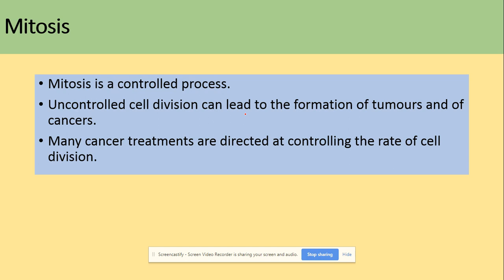Mitosis is a controlled process, and any uncontrolled cell division will lead to the formation of tumours and cancers. You will learn more about cancer in section 8. Many cancer treatments are directed at controlling the rate of cell division, because mutated tumour suppressor genes and proto-oncogenes do not properly control the rate of cell division.